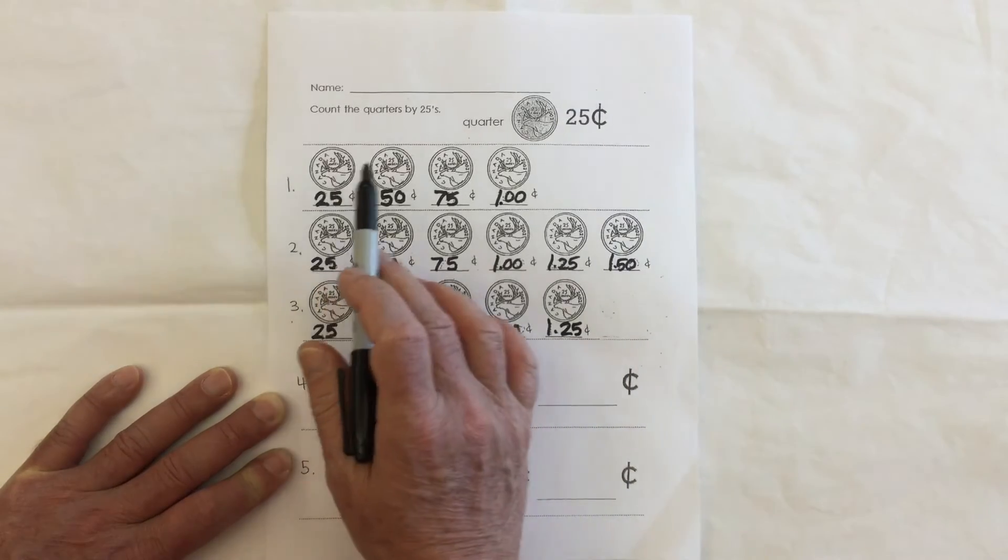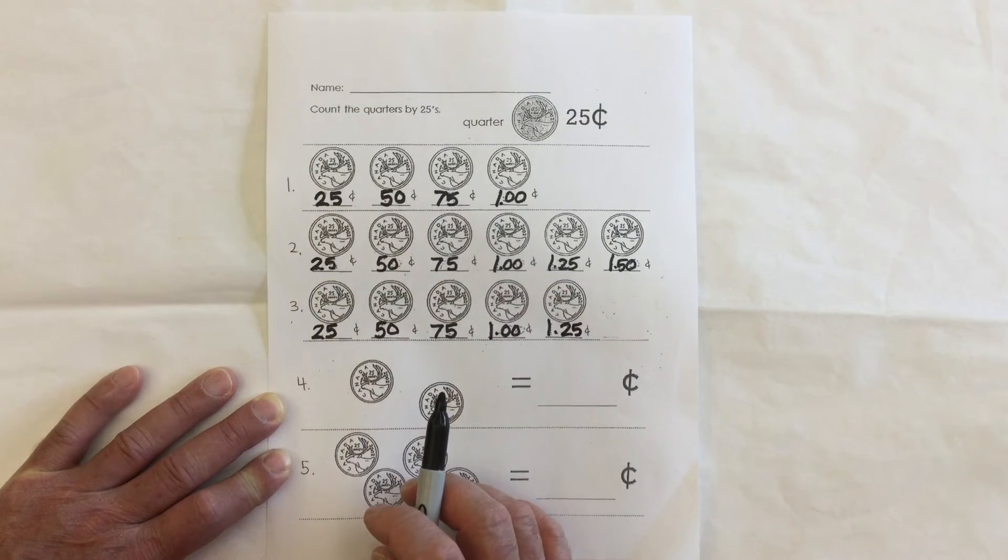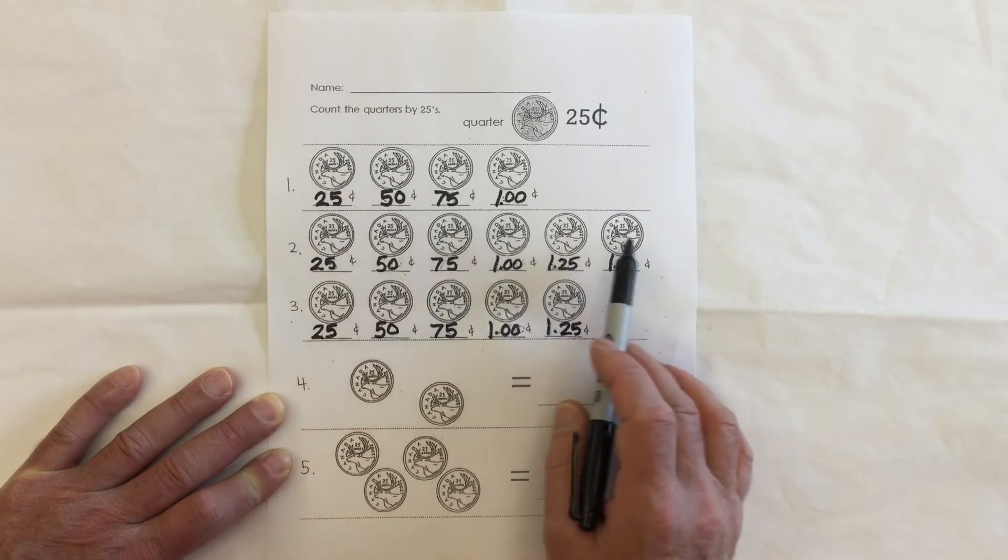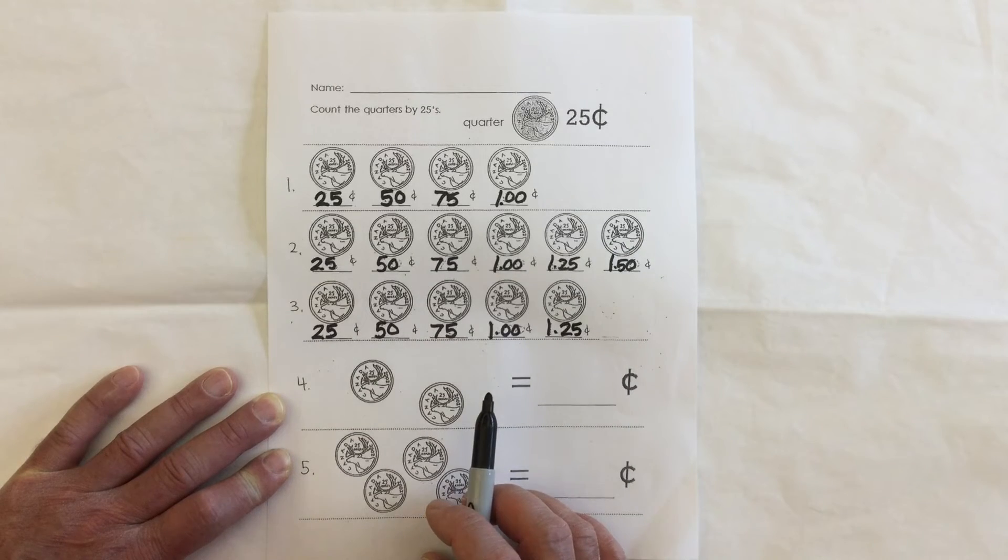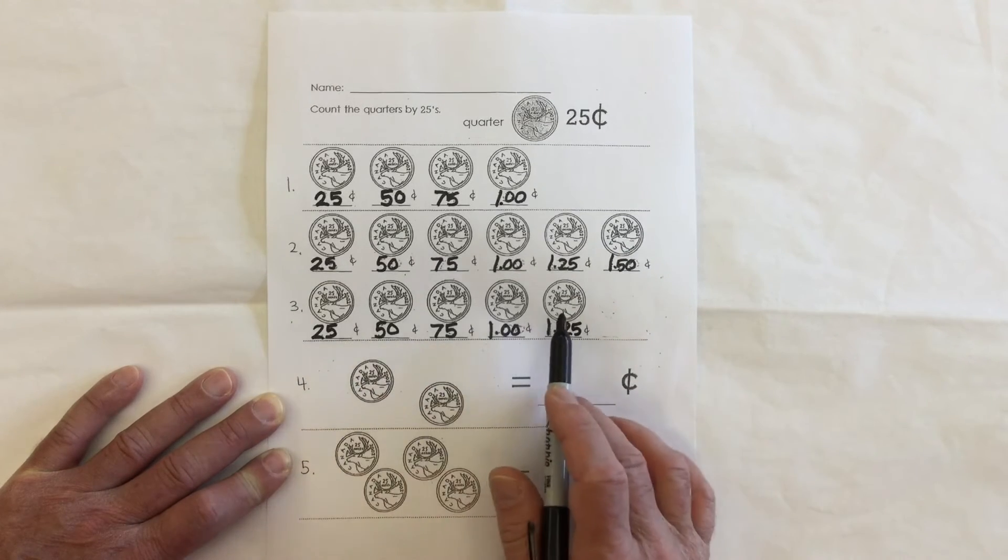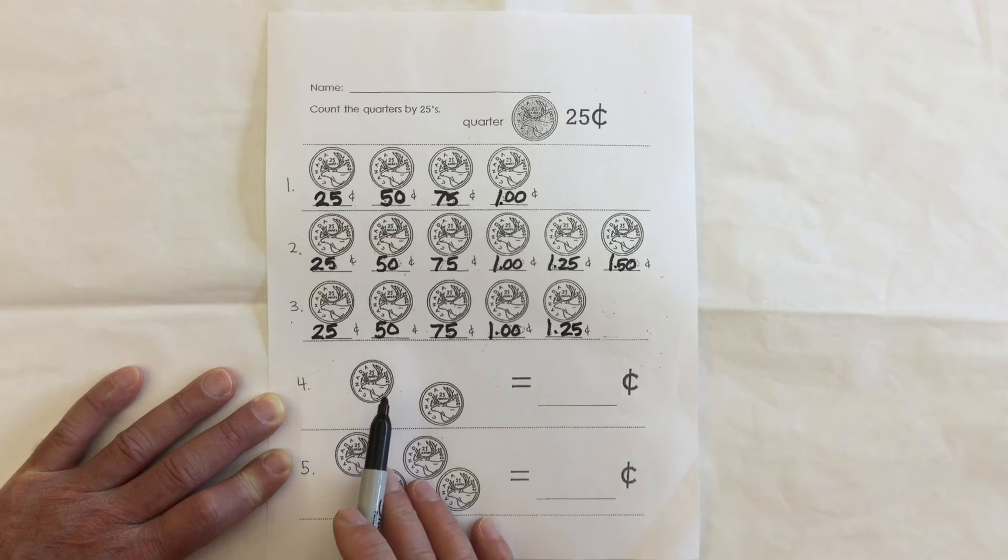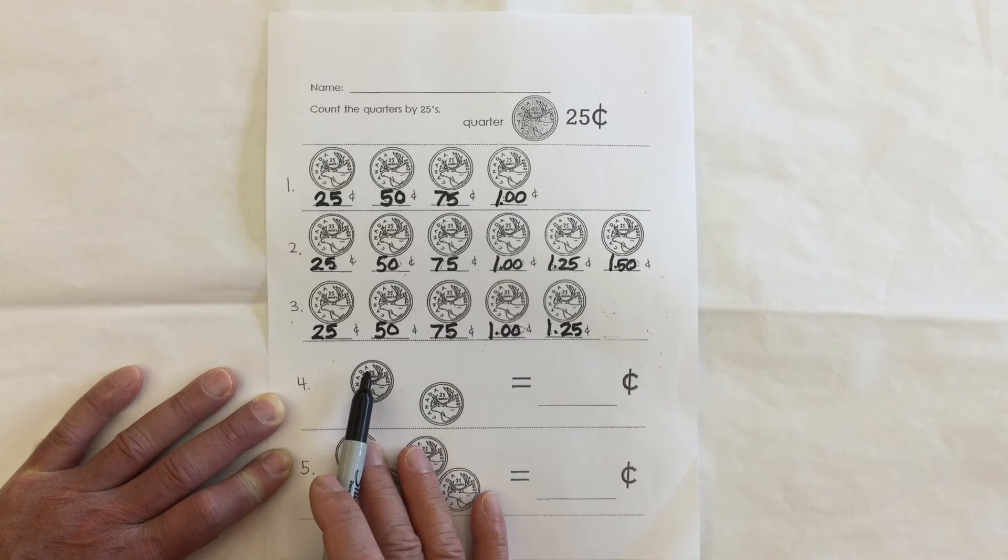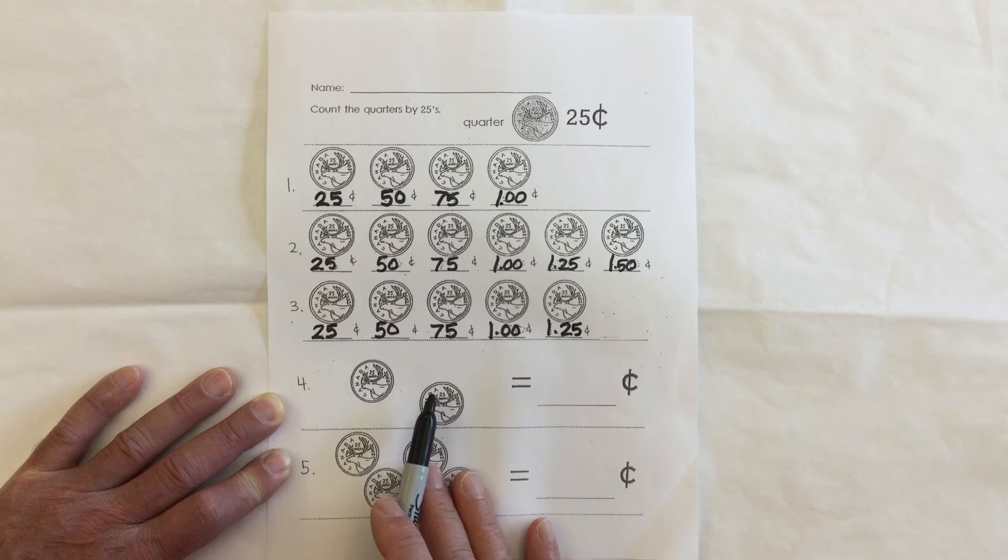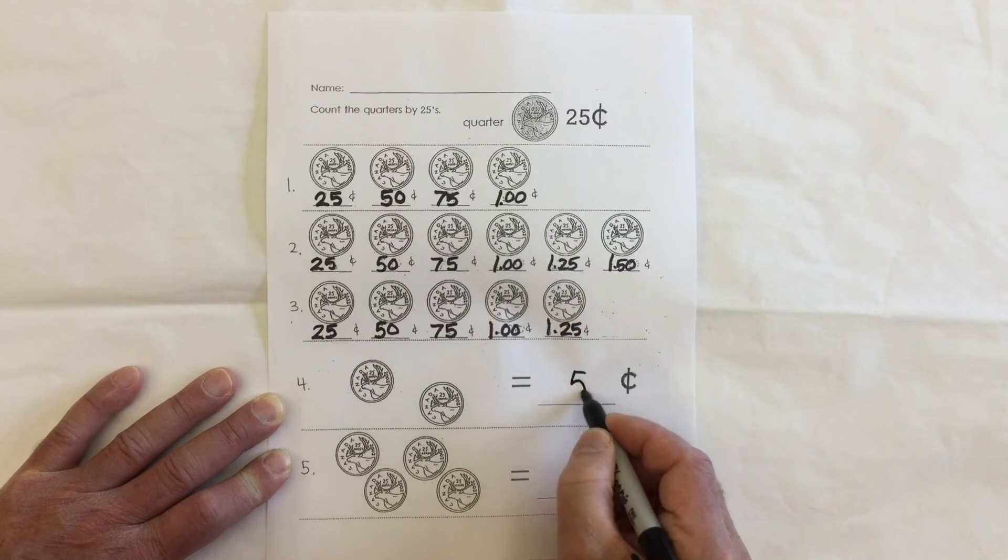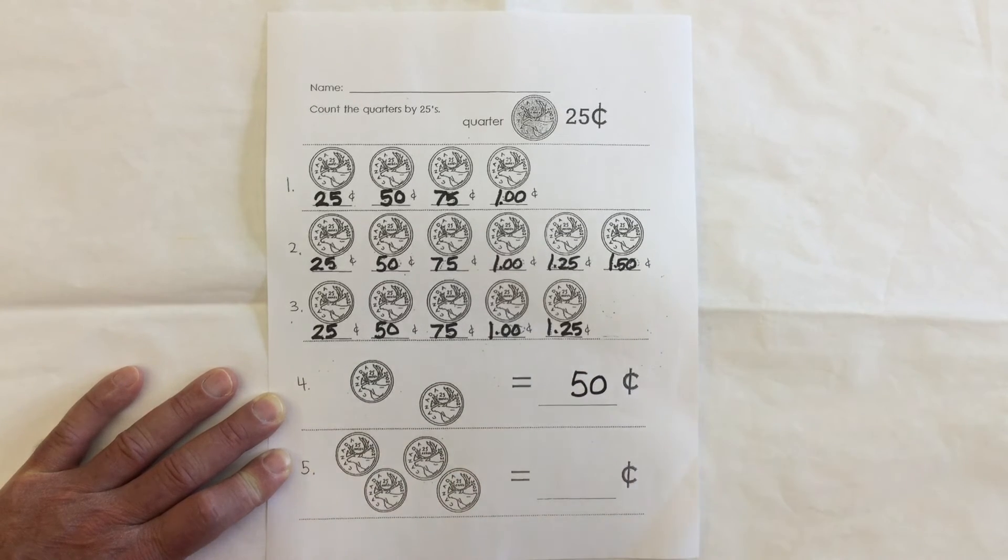So four quarters makes one dollar. Six quarters makes one dollar and 50 cents. Five quarters makes one dollar and 25 cents. So let's count what we have here. 25, 50. Two quarters is equal to 50 cents.